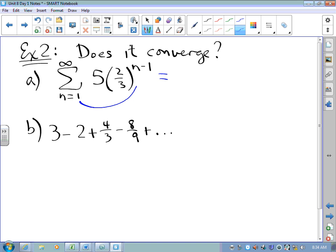And so, if we substitute n equals 1, we get 5 times 2 thirds to the 0. 2 thirds to the 0 is 1. And then if I sub in n equals 2, I get 5 times 2 thirds to the 1. And if I sub in n equals 3, I get 5 times 2 thirds squared and so on.